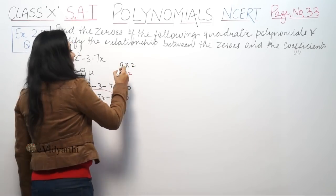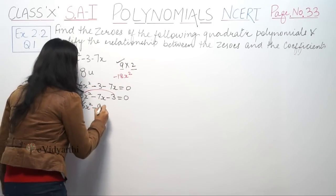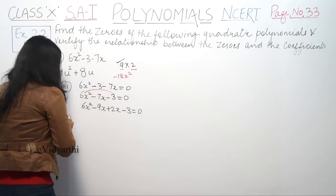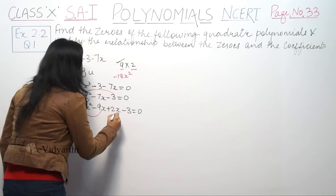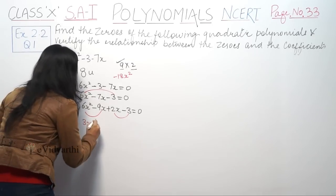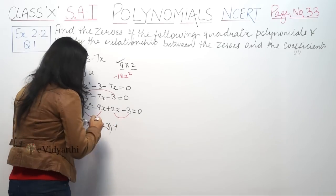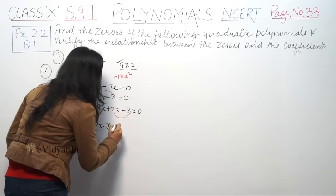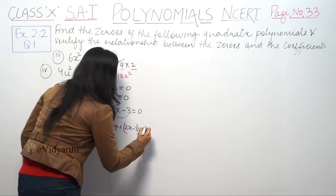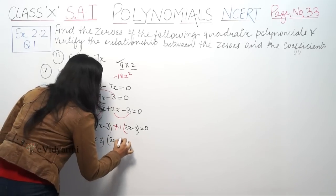We rewrite the expression as 6x squared minus 9x plus 2x minus 3 equals 0. We group the terms into two parts: 6x squared minus 9x as part one, and 2x minus 3 as part two. Taking 3x common from the first part gives 3x(2x minus 3), and 1 common from the second part gives 1(2x minus 3).